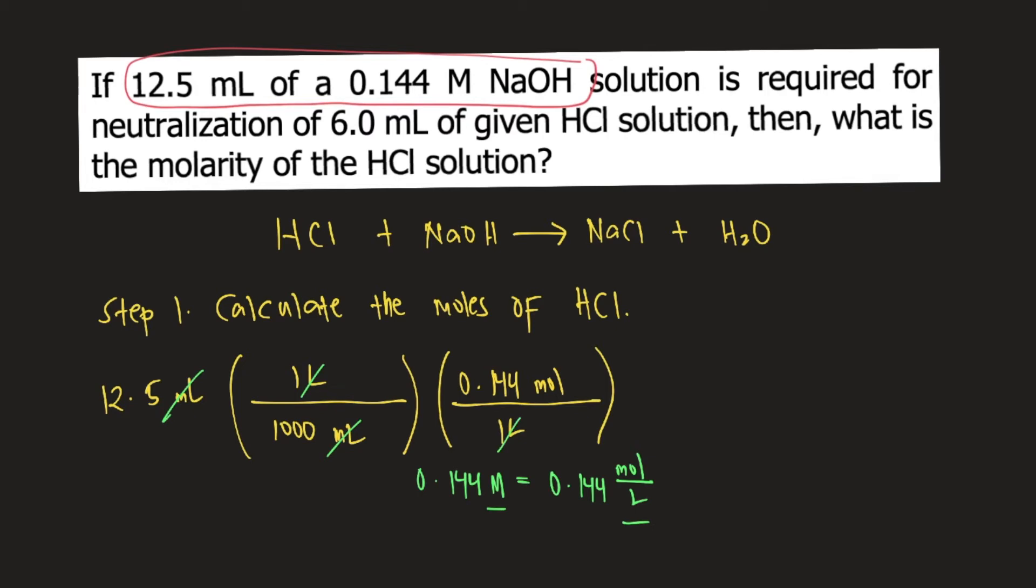Now you have moles on top. So this is moles of NaOH. Then you look at the balanced equation. It says here that 1 mole of NaOH reacts with 1 mole of HCl. So you put 1 mole of NaOH at the bottom and on top you put 1 mole of HCl.